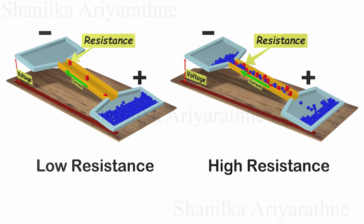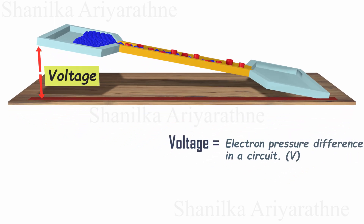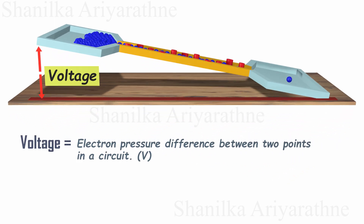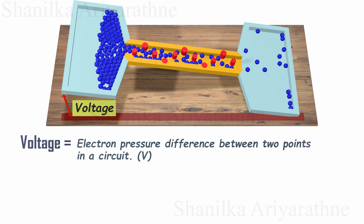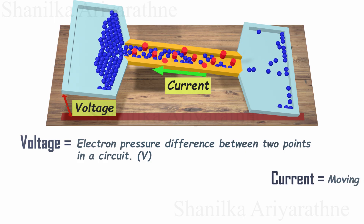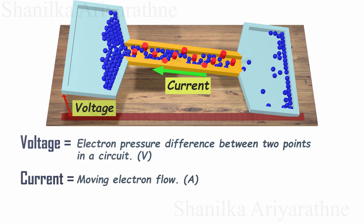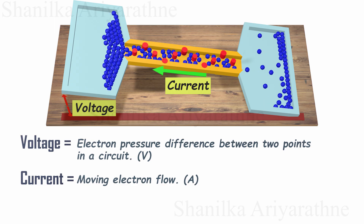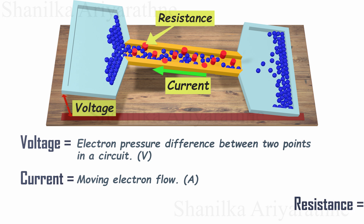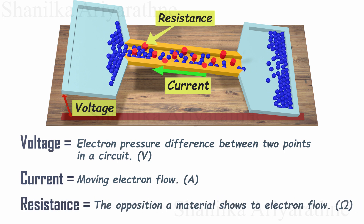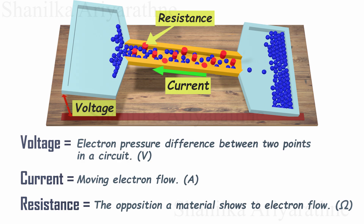Now we know the three basic pillars of electronics. Voltage: the electron pressure difference that motivates electrons to move from one point to another — we measure voltage using the unit volts. Current: the flow of electrons moving from high electron pressure to low electron pressure — we measure the amount of electron flow per second using the unit amperes. Resistance: the opposition a material shows to electron flow caused by collisions of electrons with obstacles — resistance is measured using the unit ohms.